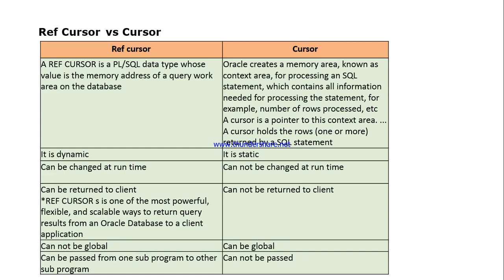A reference cursor cannot be global, but a normal cursor can be global — this is another difference. The last difference is that a reference cursor can be passed from one subprogram to another, such as from one procedure to another procedure, or from a procedure to a package. A normal cursor cannot be passed to any subprogram.